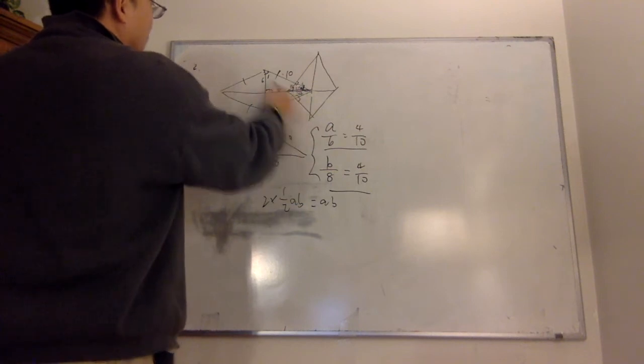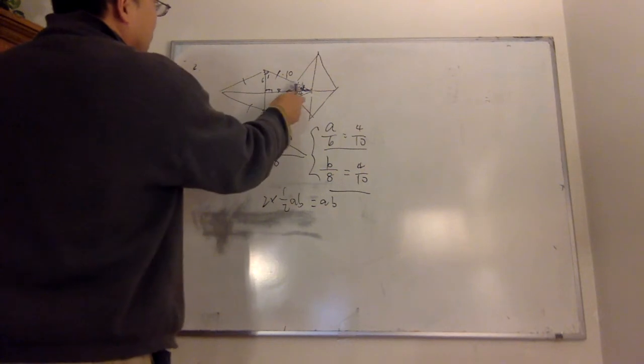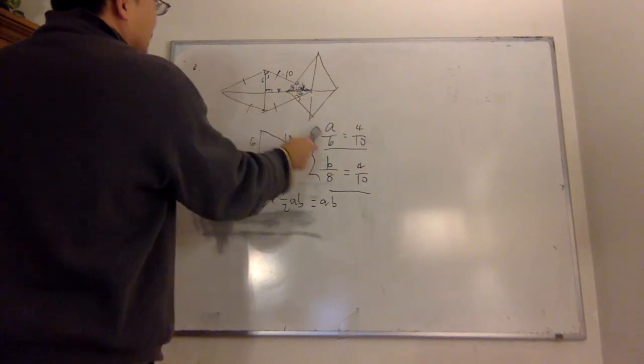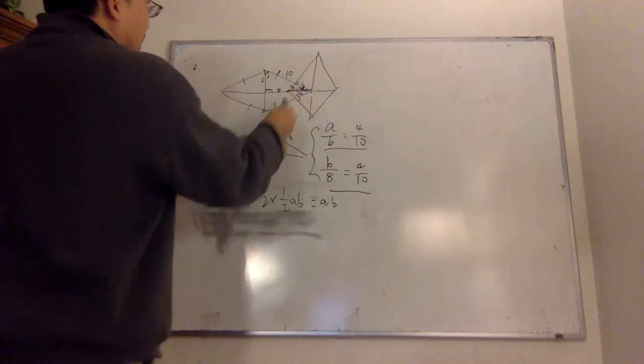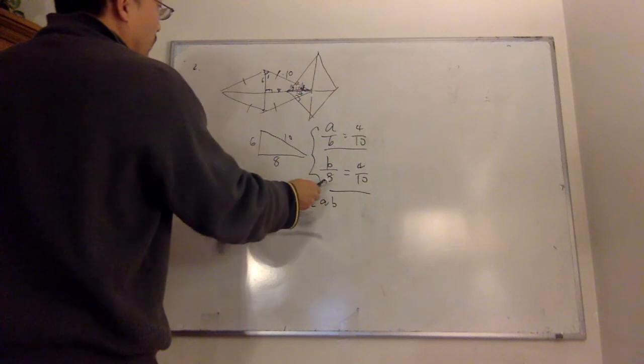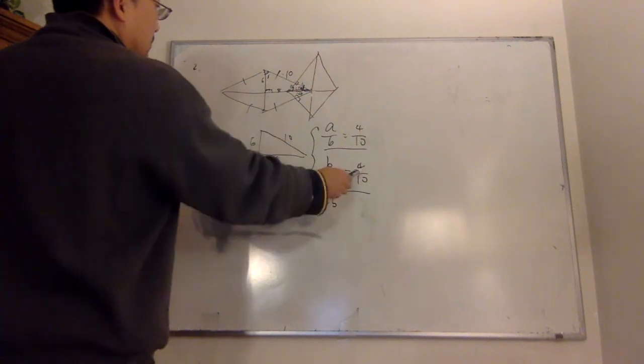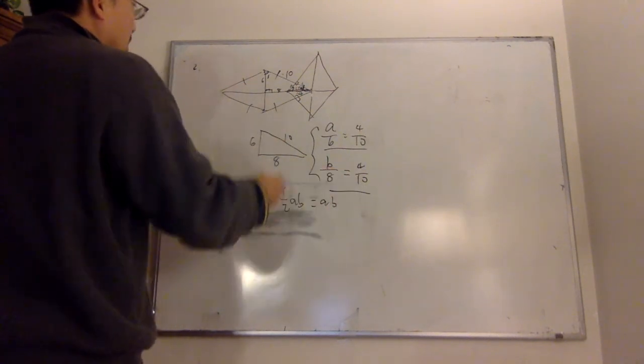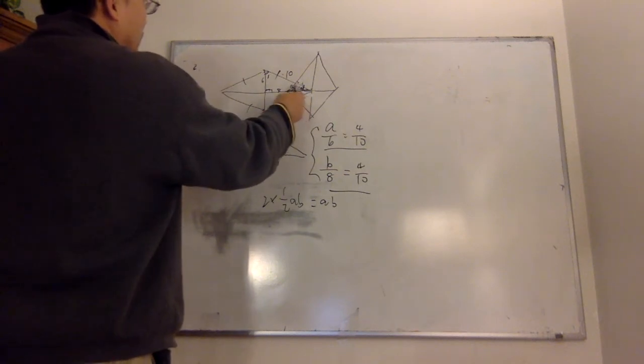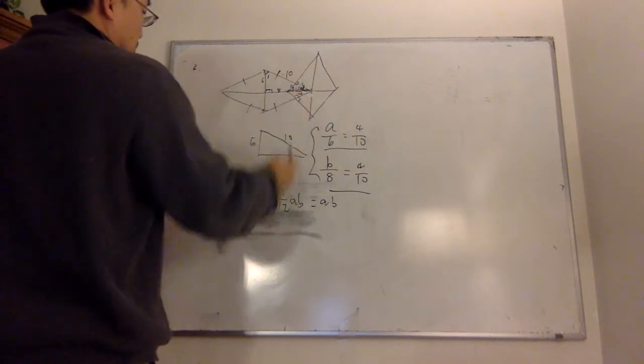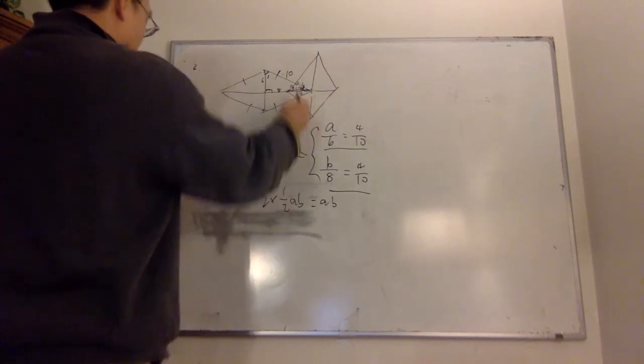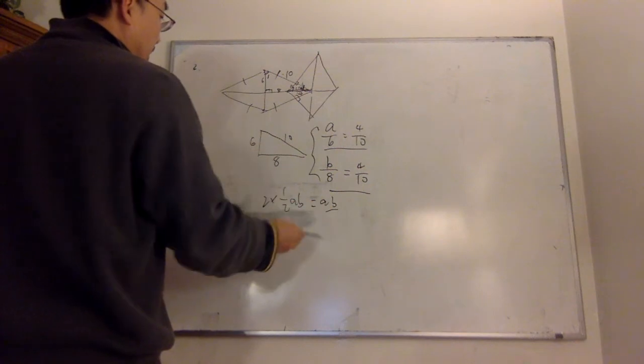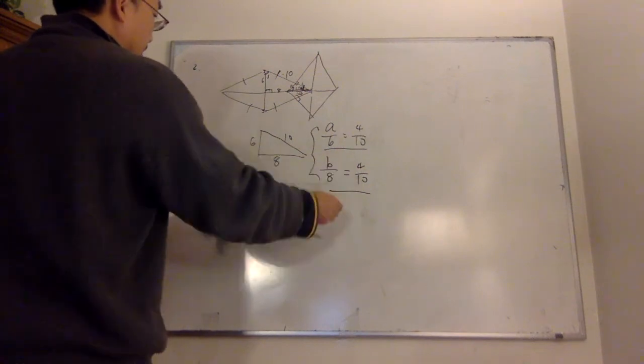One way is to realize this angle and this triangle is a similar triangle. So, let's say A and B. So, A over 6 equals 4 - this length is 4 - over 10. So, you can solve for A. And the same for B: B over 8 is equal to 4 over 10. So, you can solve for A and B. You can get the area of this triangle, one half of A and B. And there are two of them. So, you need to add them up. Once you solve A and B, you can get the result.